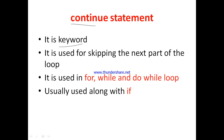The continue statement is used for skipping the next part of the loop. It is used inside the for loop, the while loop, and the do-while loop. Usually it is used along with the if statement. When the if condition is satisfied, at that time continue will be executed.